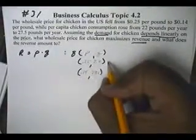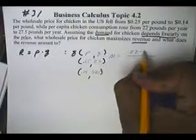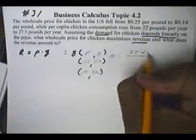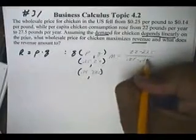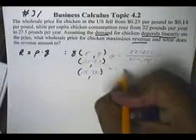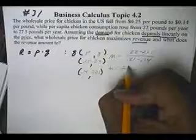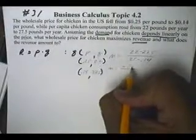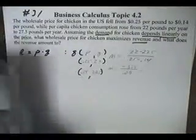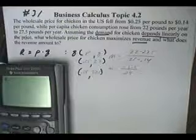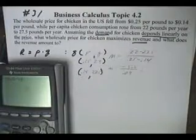So a slope for that would be m equals 22 minus 27.5 all over 0.25 minus 0.14. Let's work that out. That'll be a negative 5.5 and this will be 0.09. Let's do that real quick. Negative 5.5 divided by 0.09.